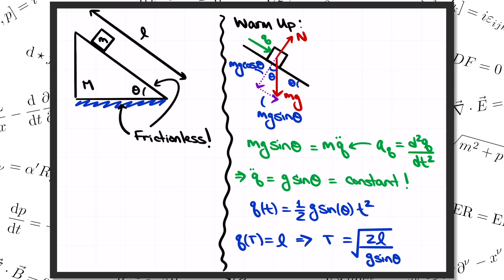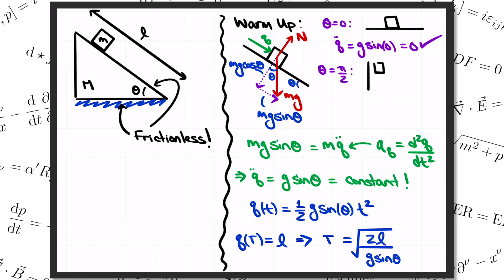Let's do some checks to see if this makes sense. If theta equals zero, our ramp is just a flat table, so the block should sit at rest. Indeed, q double dot equals g times sine of zero, which vanishes. When theta equals pi over 2, the ramp becomes a vertical wall and the block should be in free fall. We get q double dot equals g times sine of pi over 2, which is just g. That was our warm-up.